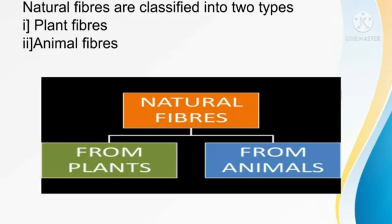In your previous class you learned about plant fibers. In this lesson, we are going to discuss about animal fibers. Animal fibers are obtained from animals like sheep, goat, yak and silkworm.